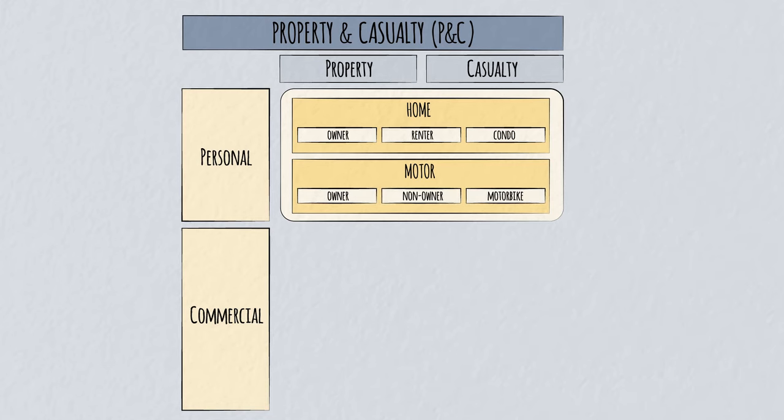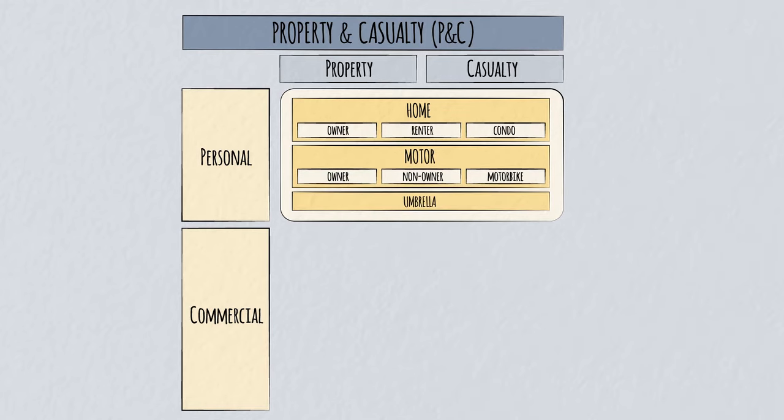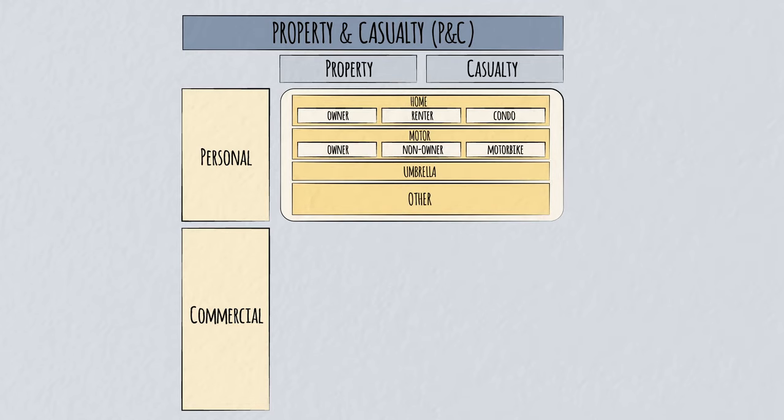To get additional protection for the amount above the liability limits in your auto or home insurance, you can buy an umbrella or excess liability policy. And there are many other personal policy types, for example pet and travel insurance.